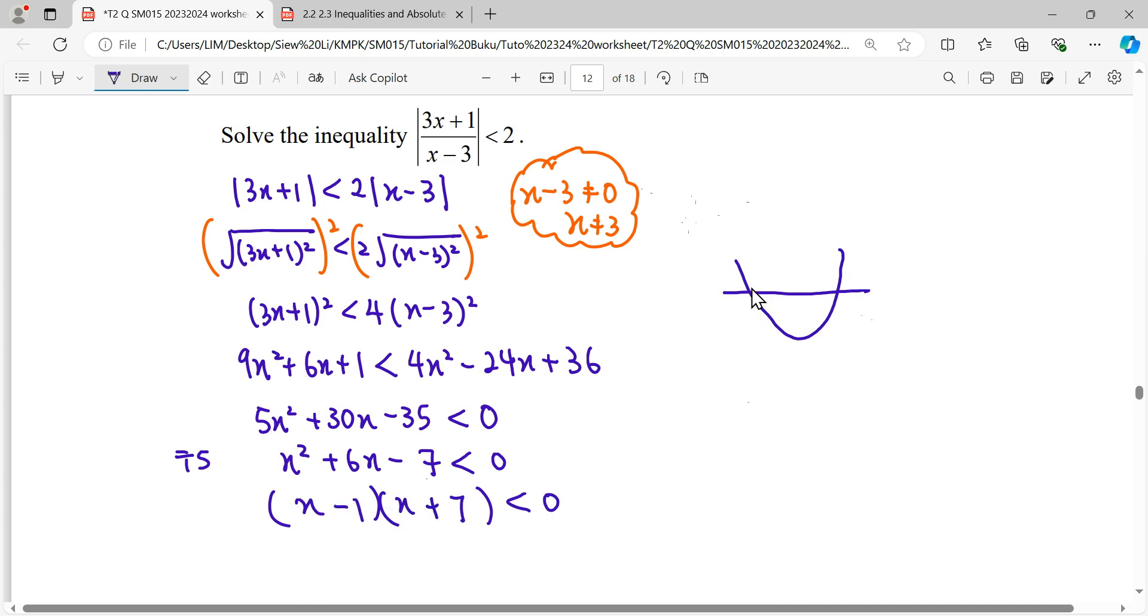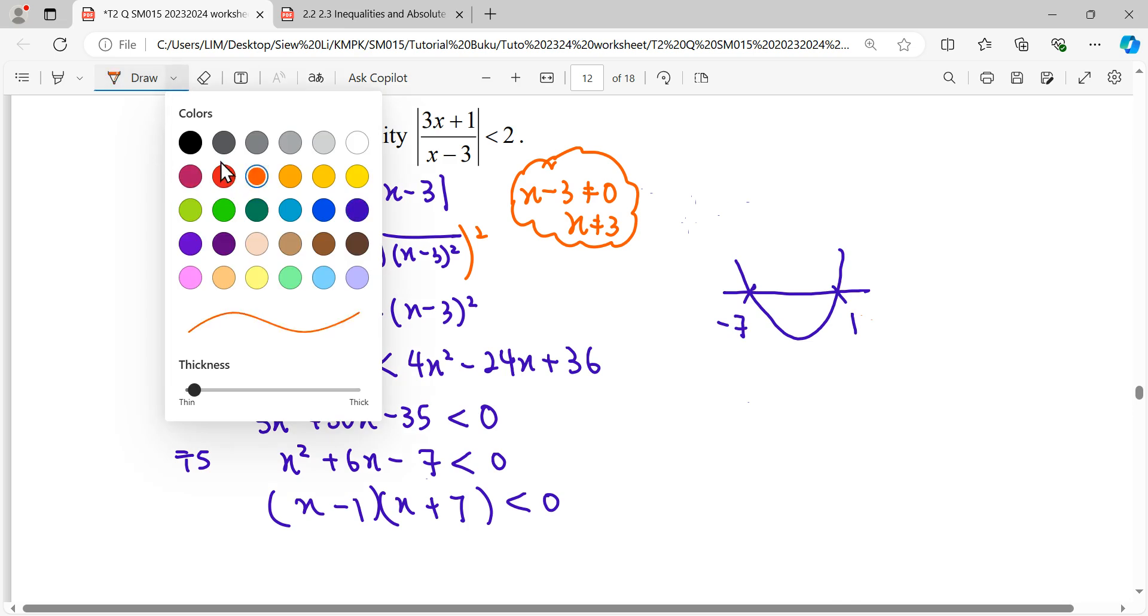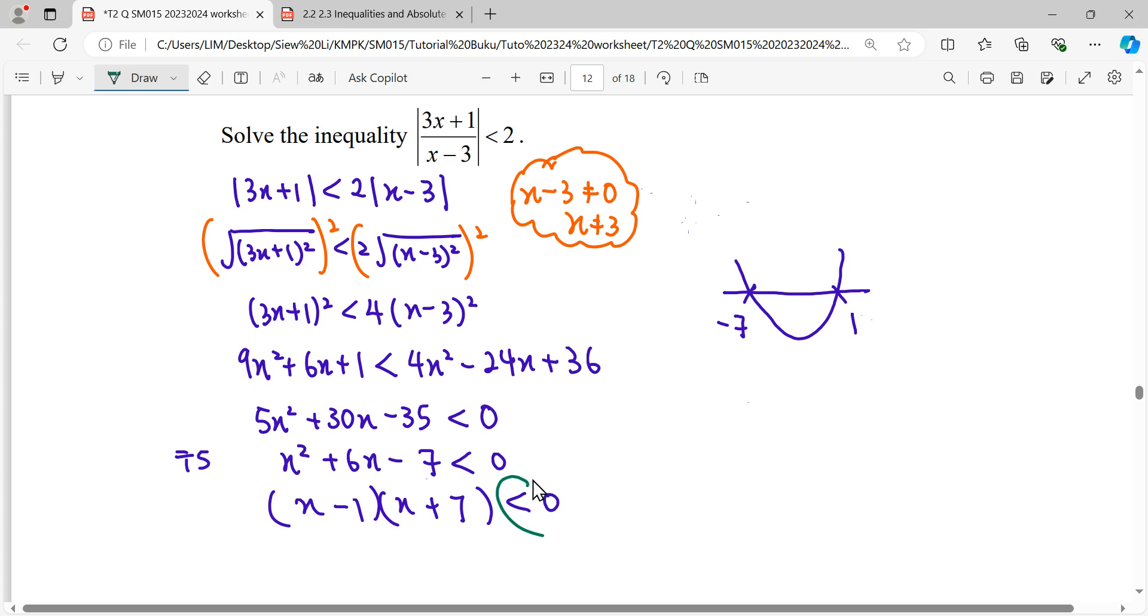So x we have negative 7 and 1, and then the region we want to shade is less than 0, so it will be below the x-axis.